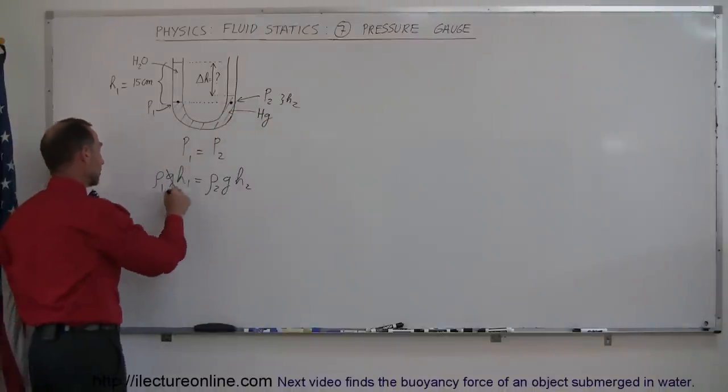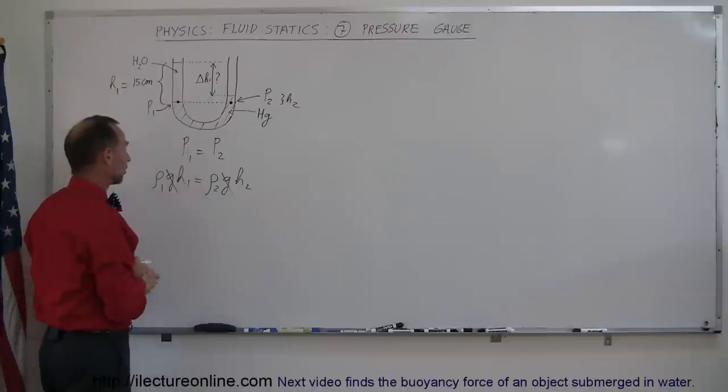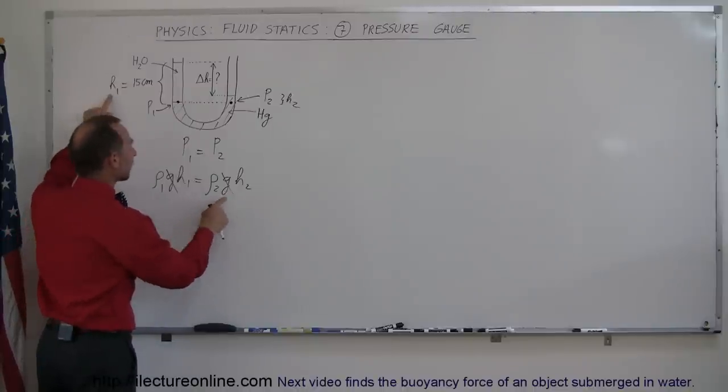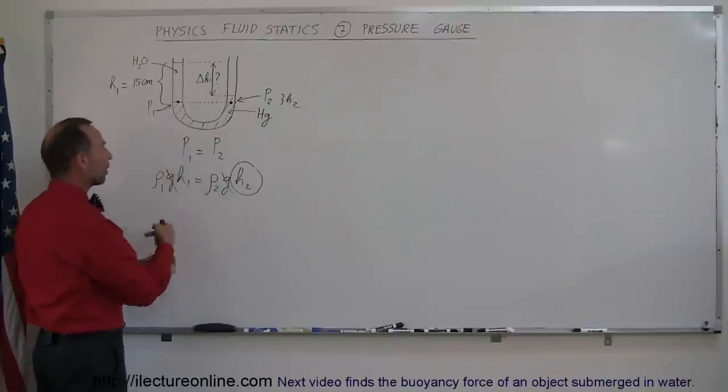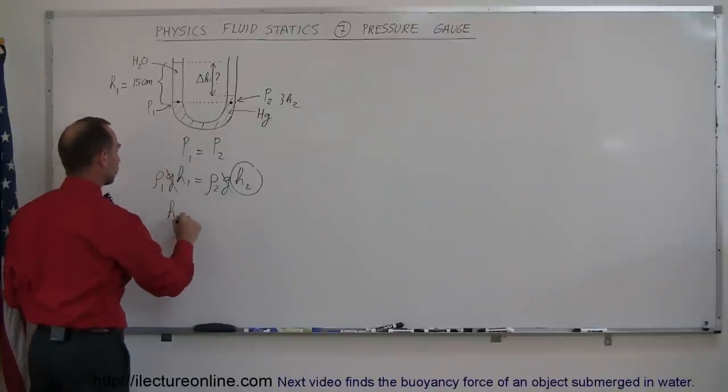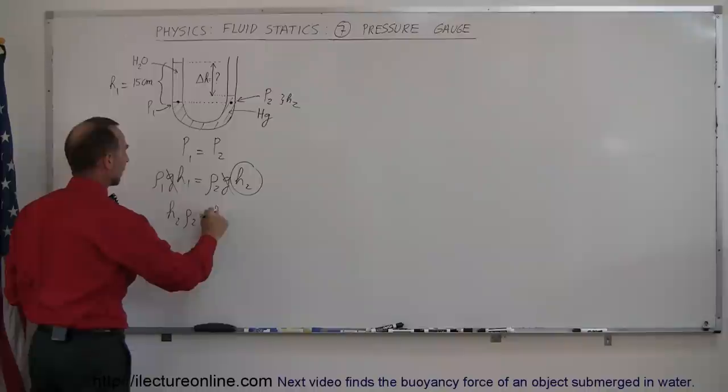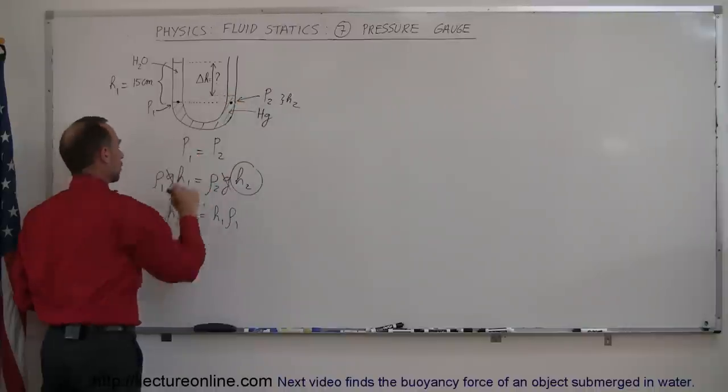All right, so I see a g on both sides which means I can get rid of the g on both sides, cancel those out. And since I already know what h1 is, I'm going to figure out what h2 is equal to. Turning the equation around I can say that h2 times ρ2 is equal to h1 times ρ1, and dividing both sides by ρ2 I can say that h2, which is the height of the mercury above that point, is equal to h1 times the ratio of ρ1 divided by ρ2.